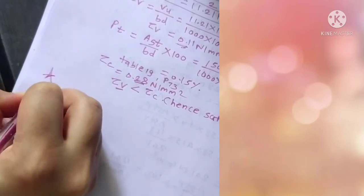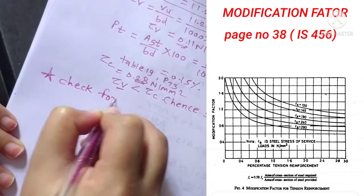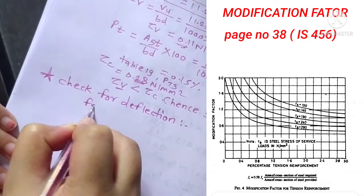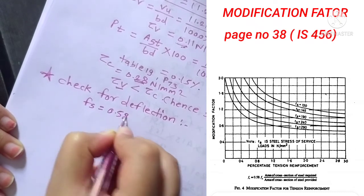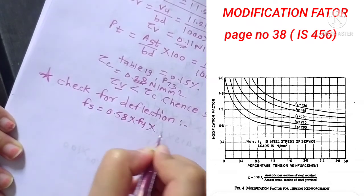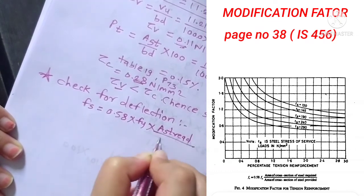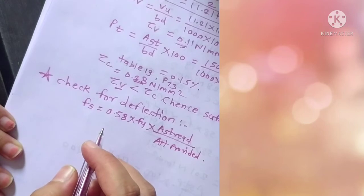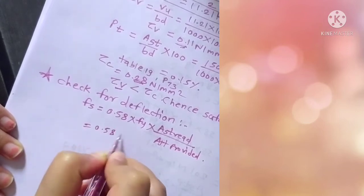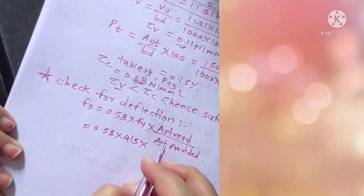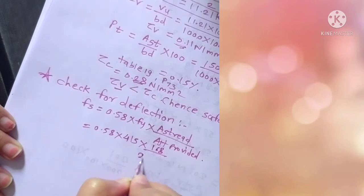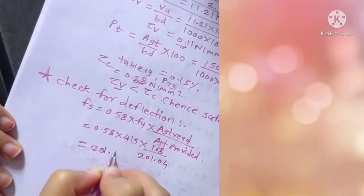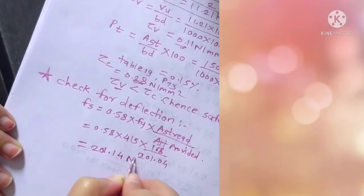Next, which is very important, is check for deflection. The formula for Fs will be 0.58 into Fy into AST required divided by AST provided, which we are going to consider as main steel. 0.58 into 415 into 168 divided by 201.04 comes out to be 201.14 newton per mm square.